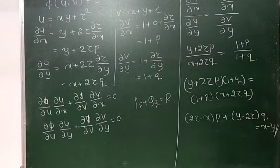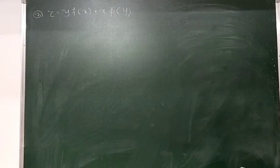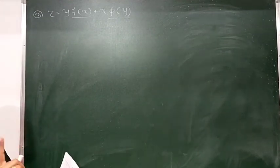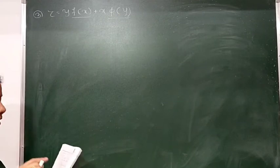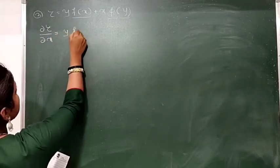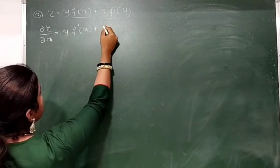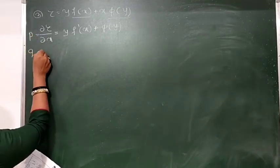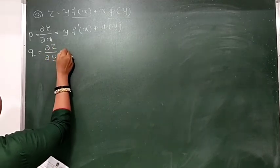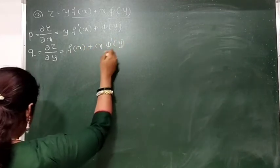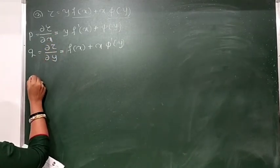Similarly, this type of example will be asked compulsory. In the third one, F of x is one function and π of y is another function. We have to apply first and second order derivatives with respect to z. Now ∂z/∂x: y is constant, F becomes F dash, x becomes 1, π of y remains constant. This we call p. And q equals ∂z/∂y: y becomes 1, F of x is constant, plus x is constant so π becomes π dash of y.